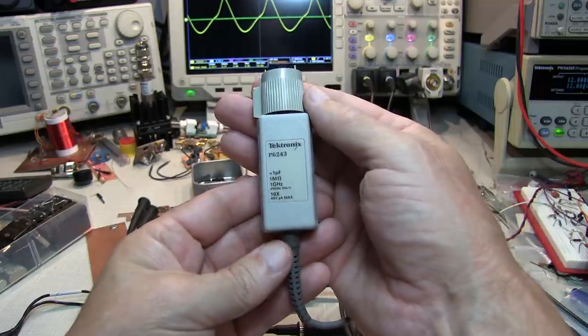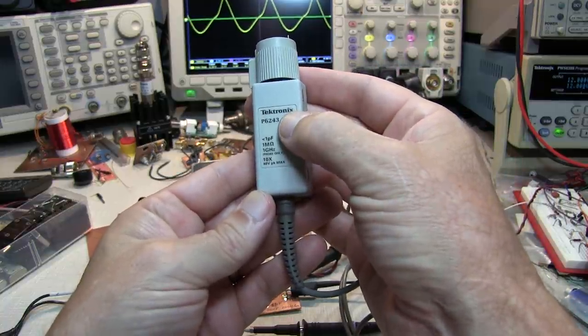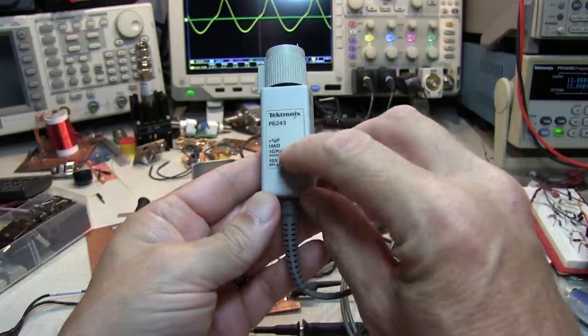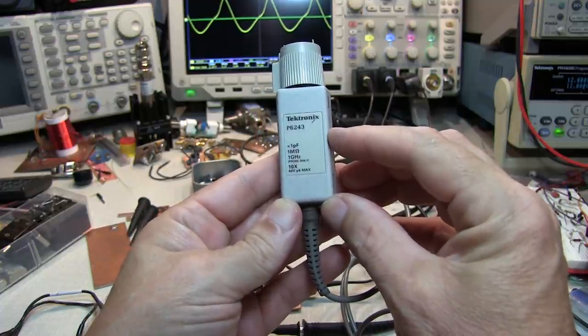To get the lowest possible loading, you're generally going to have to move to an active FET probe, like this P6243. This is also a 1 gigahertz probe, but notice that the capacitive loading is rated at less than 1 picofarad.